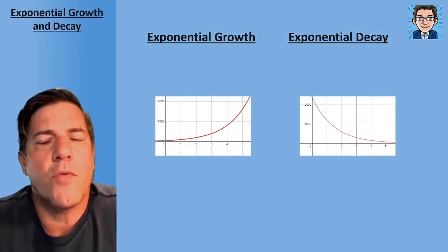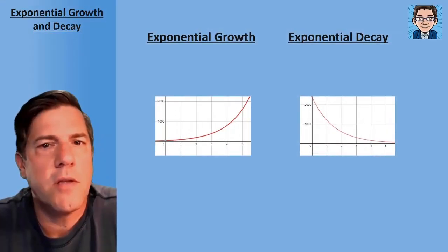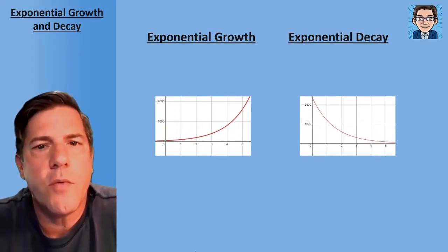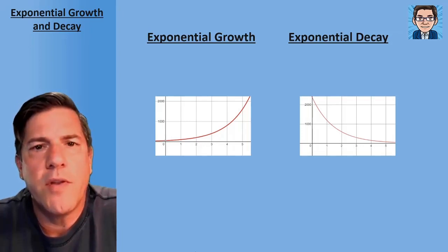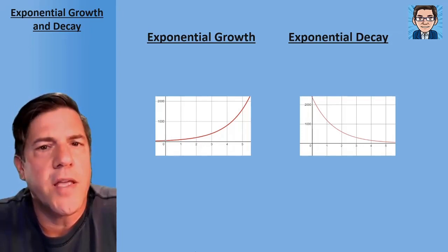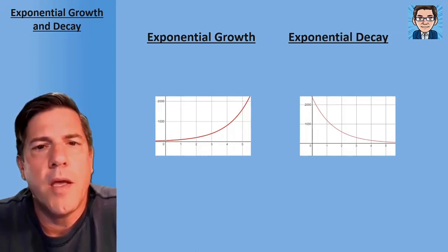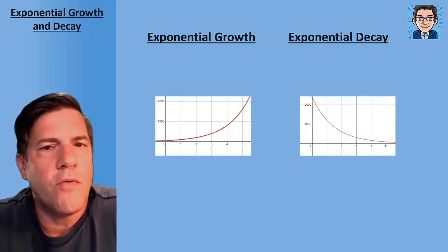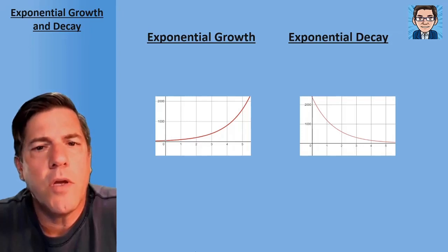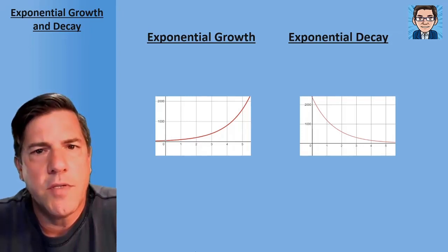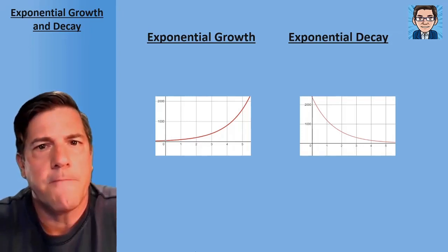Hi, so exponential growth and decay exists in nature when you look at things like population, radioactivity, radioactive decay, bacterial growth, and even with the coronavirus you'll see exponential growth. So let's take a closer look and make some sense of exponential growth and decay.